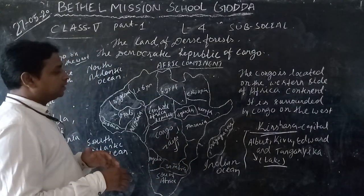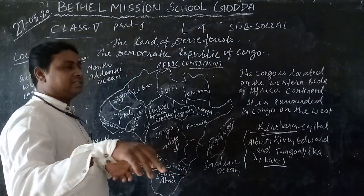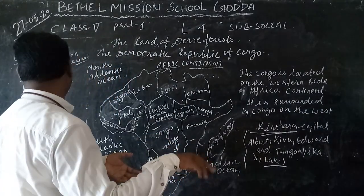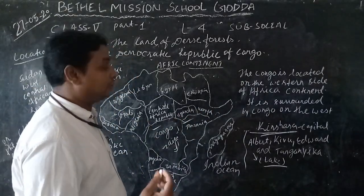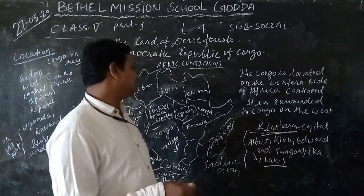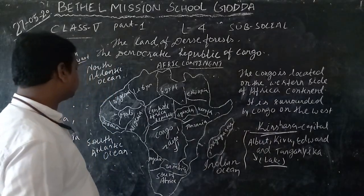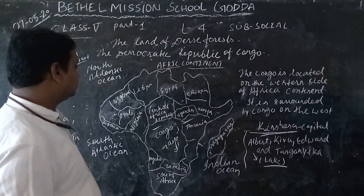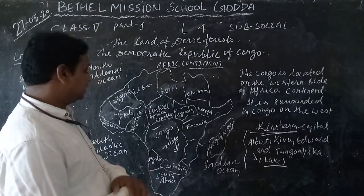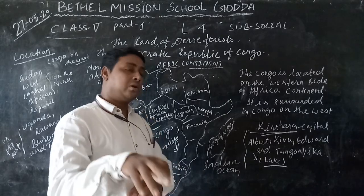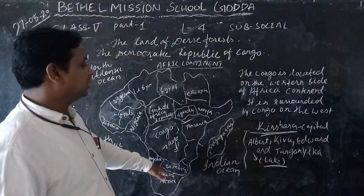On the east side, countries like Uganda, Burundi, Tanzania, Kenya, Rwanda are located. On the south, Angola, Zambia, Zimbabwe, and South Africa are located.